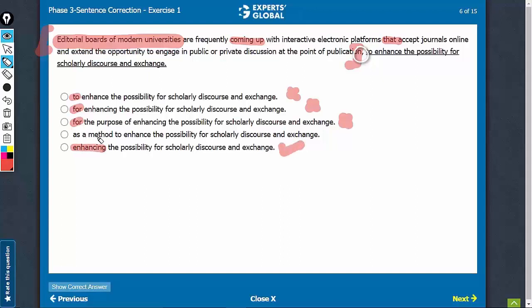Even option D, if you go by elimination, you will see that after the comma, 'as a method to' is quite awkward. E is the correct answer choice.